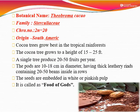Cocoa is also called as chocolate tree. Botanically, cocoa is called as Theobroma cocoa, under the family Sterculiaceae. Chromosome number is 20 and the origin of cocoa is South America. Cocoa trees grow in tropical rainforest. The height of the tree is about 15 to 25 feet. A single tree produces 20 to 50 fruits per year. The type of fruit is a pod. The pods are 10 to 18 cm in diameter, having thick leathery rinds containing 20 to 50 beans inside in a row. The seeds are embedded in a white or pinkish pulp. It is also called as food of gods.